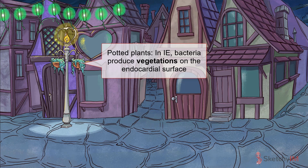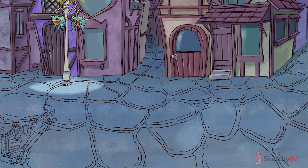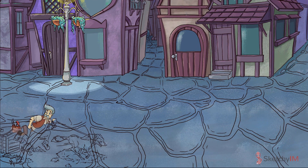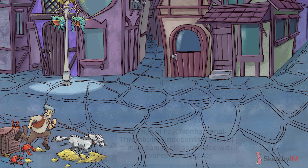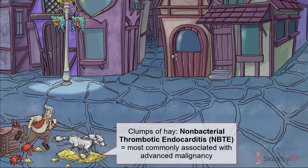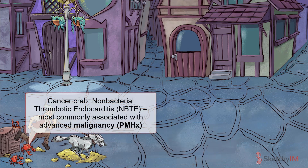Don't let their cuteness fool you — they can become floating death buckets, causing the symptoms and signs we'll get into in a moment. Of course, endocarditis isn't always caused by infection. Non-bacterial thrombotic endocarditis is a rare condition characterized by the deposition of sterile platelet thrombi on heart valves — hence the non-bacterial clumps of hay spilled all over the ground. NBTE is most commonly associated with advanced cancer, represented by the recurring Sketchy symbol, the cancer crab.